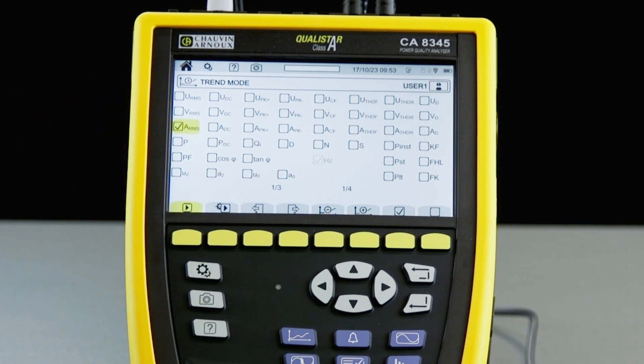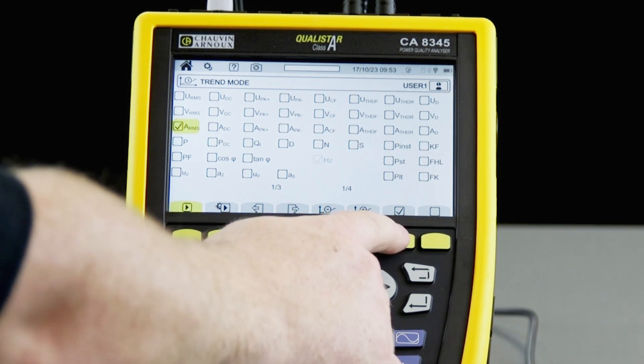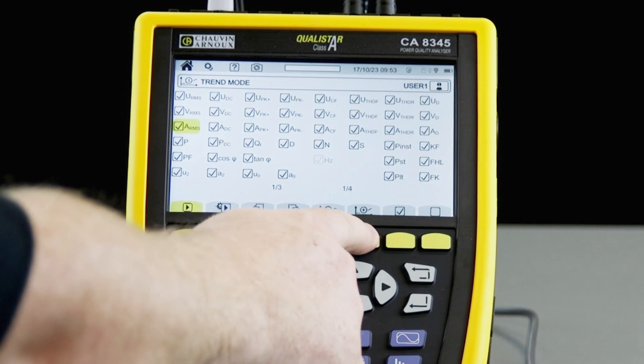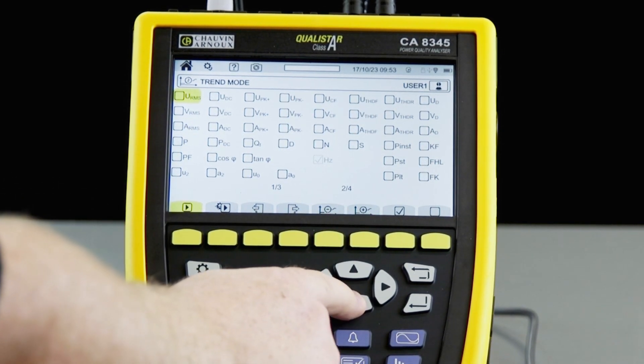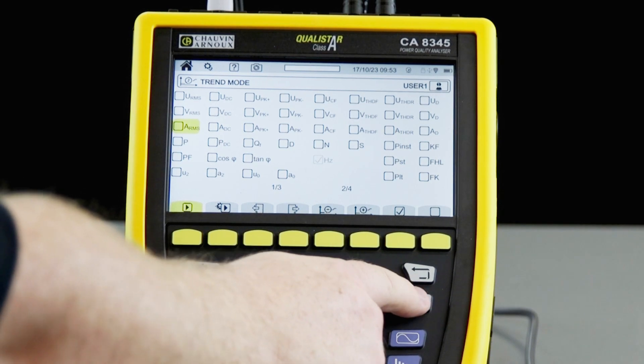It's possible to program four different trend modes for common logging sessions that you may be carrying out. For example, trend mode one may be everything. Trend mode two could be just amps RMS and so on. So once we have defined the trend modes,